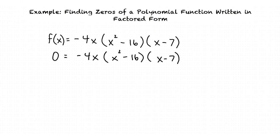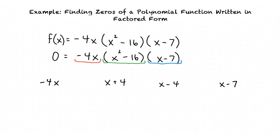Before we begin, we must completely factor each polynomial. The only polynomial here that needs to be factored further is x squared minus 16. x squared minus 16 can be factored into x plus 4 and x minus 4. Now that our function is completely factored, we can set each of our factors equal to 0.